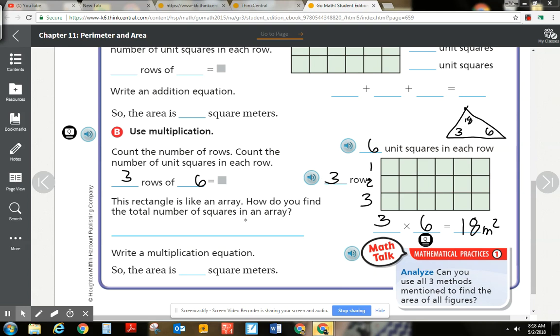Total number of squares. The rectangle is like an array. How do you find the total number of squares in an array? Rows times how many in each? Or your length times width equals area. You guys will really see this equation a lot. I'll talk a lot about this equation also.